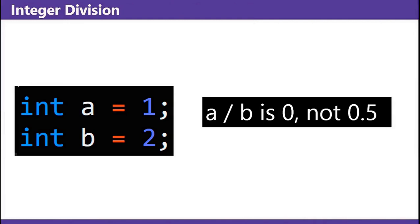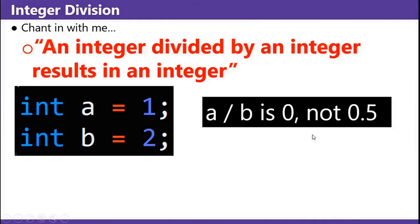Integer division. Chant it with me: An integer divided by an integer results in an integer. An integer divided by an integer results in an integer. For example, int a equals 1, int b equals 2, a divided by b is 0, not 0.5.